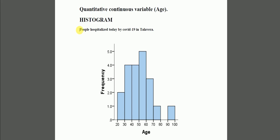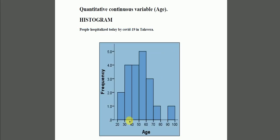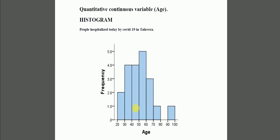In this case we have people hospitalized today in Talavera by COVID-19. This is the graph, and here we have H, the variable on the horizontal axis, and the frequency on the vertical axis. Here we have bars, but the bars are together — next to each other — because this is a continuous variable. It doesn't stop.